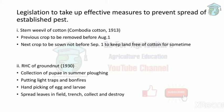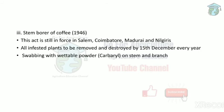For the red hairy caterpillar of groundnut, measures include: collection of pupae during summer plowing, putting light traps and bonfires, hand picking of eggs and larvae, and spreading leaves in the field in a trench — the caterpillars move onto the leaves and can then be collected and destroyed.